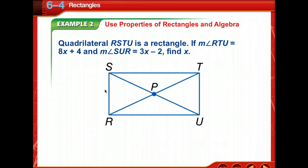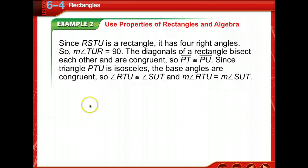Now we're going to use the properties of rectangles and algebra. We're told that quadrilateral RSTU is a rectangle. If the measurement of angle RTU equals 8X plus 4 and angle SUR equals 3X minus 2, we need to find X. Since we have a rectangle, all four angles equal 90 degrees, so the measurement of angle TUR is 90.